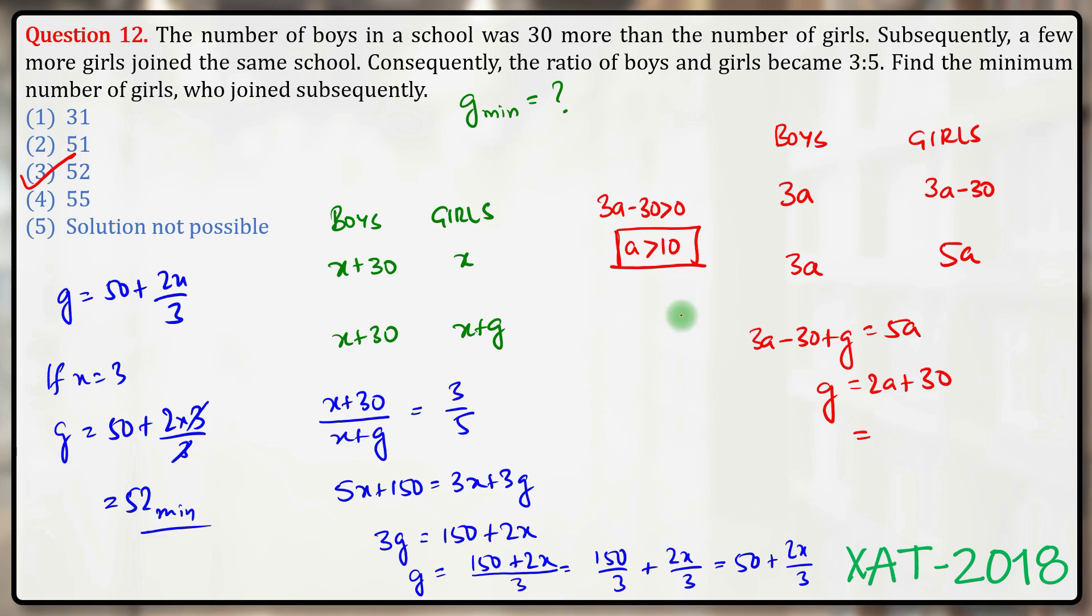Now because we want to minimize g, we want to use the minimum possible value of a. But a should be greater than 10, so minimum possible value will be 11. So 2 times 11 plus 30—that's 22 plus 30—52 should be the minimum possible value.